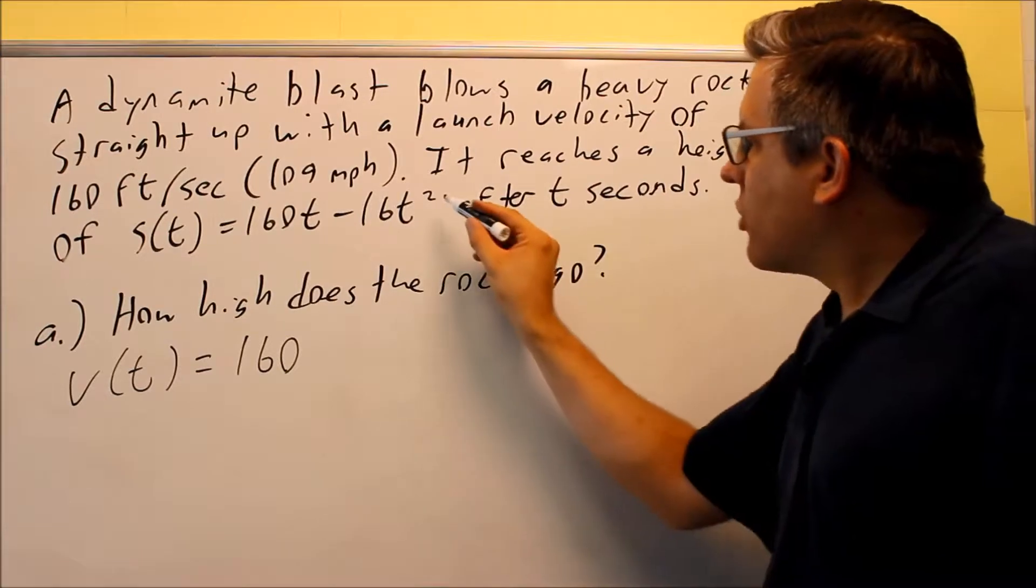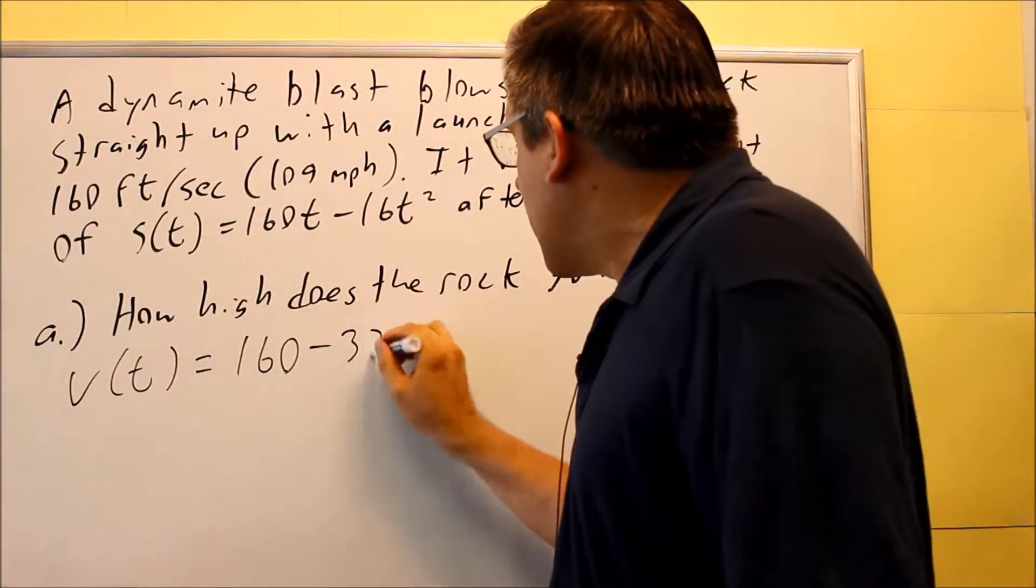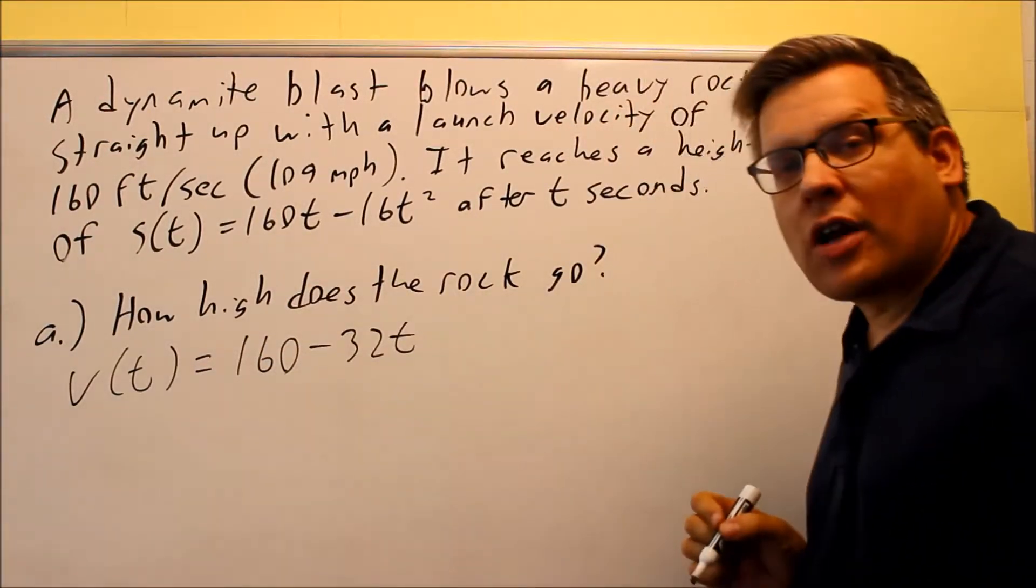And in this one, the 2 is going to come down and multiply by the 16 and we get negative 32t. So this is going to be your velocity function.